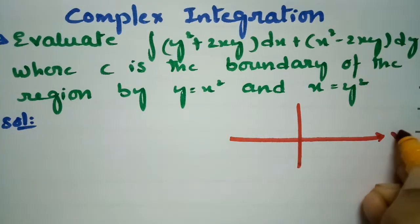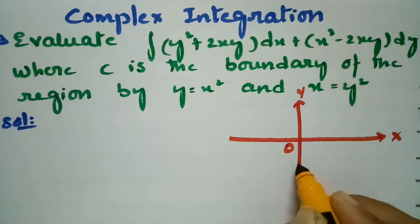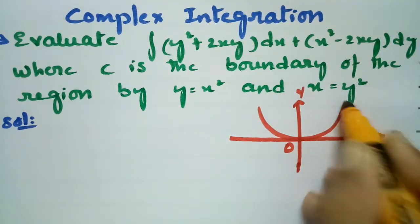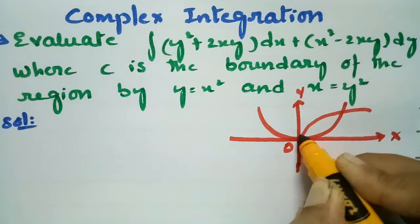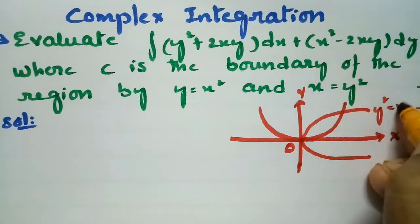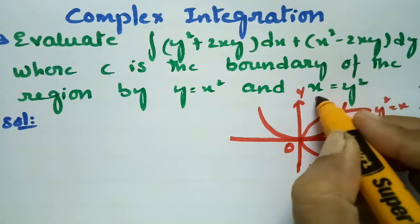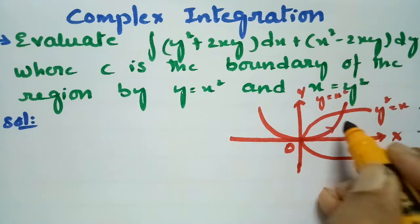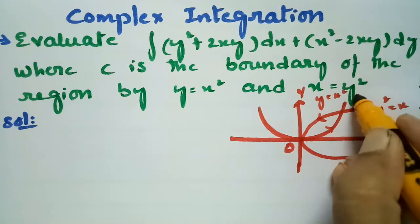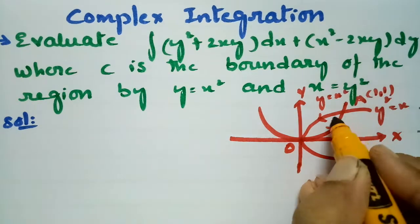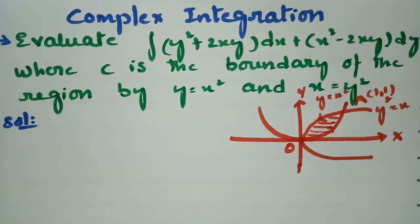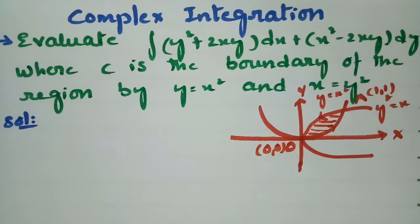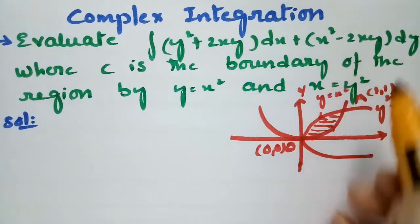This is the x-axis, this is the y-axis, and this is the origin. The curve y = x² and the curve y² = x are shown. The point A is at (1, 1) and the origin O is at (0, 0). This is the region we need to evaluate the integral over.